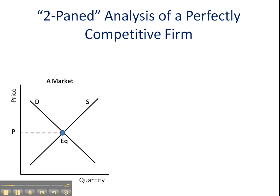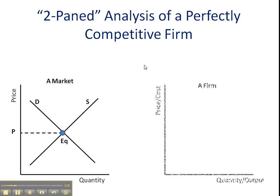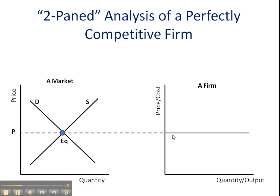We employ what's called a two-pane analysis to analyze perfectly competitive firms. Here is pane one — this is a market, very typical of the markets we've been dealing with for the past few weeks — and next to it we place a firm. Note the vertical and horizontal axes: the vertical axis is price/cost, and the horizontal axis is quantity/output. Firms are price takers; they've got to take the market price, and so I deliver that market price over to our firm. Remember to set these two diagrams side by side.